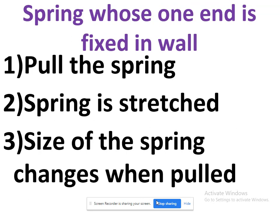To summarize: force is the push or pull on a body. When force acts on a body, the effects you can observe are: one, motion can be changed from rest to motion or vice versa; two, the speed of the body can be changed; three, the direction of the body can be changed; and four, the shape of the body can be changed by the application of force. In the next class we will discuss balanced and unbalanced force.